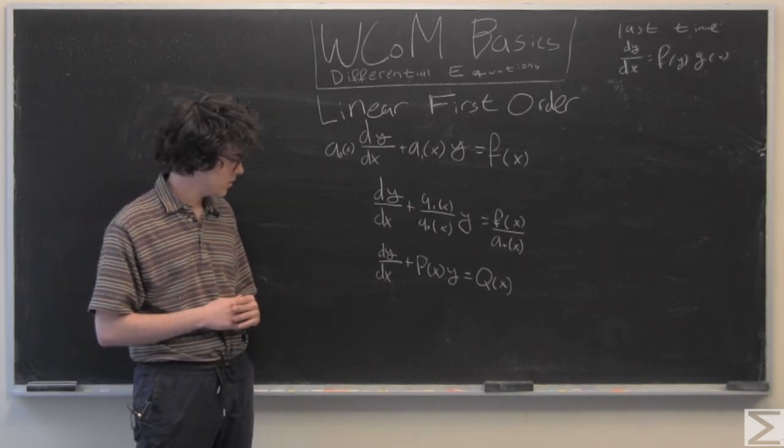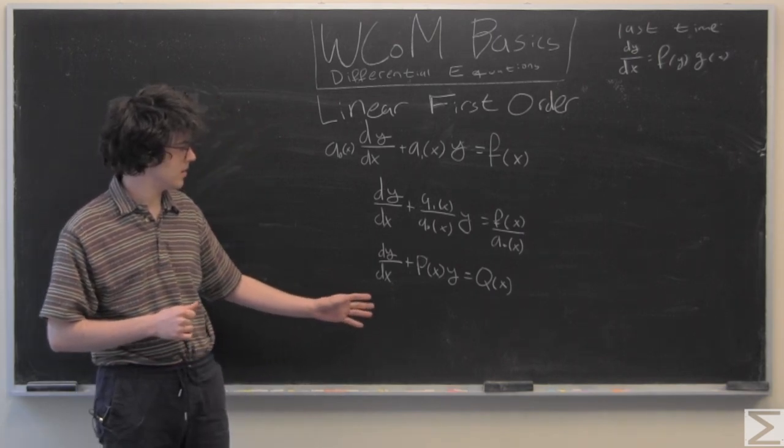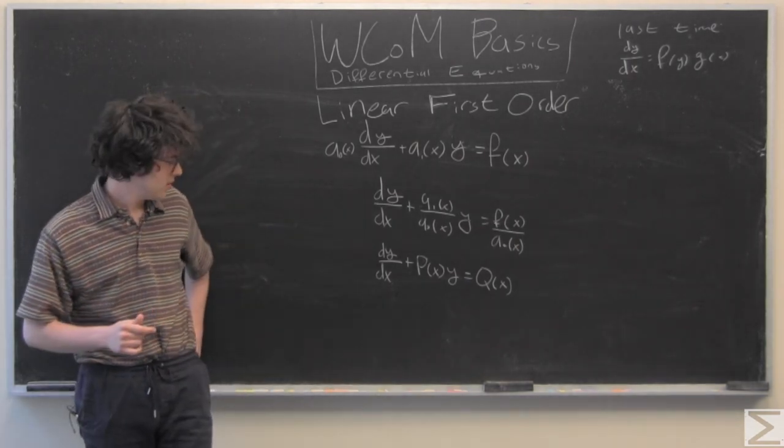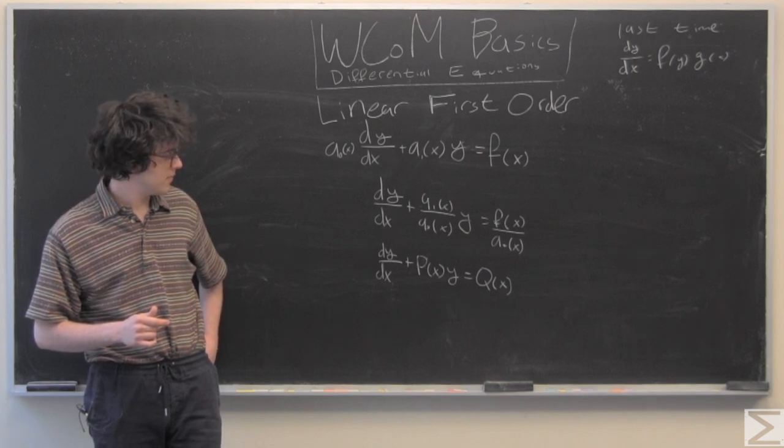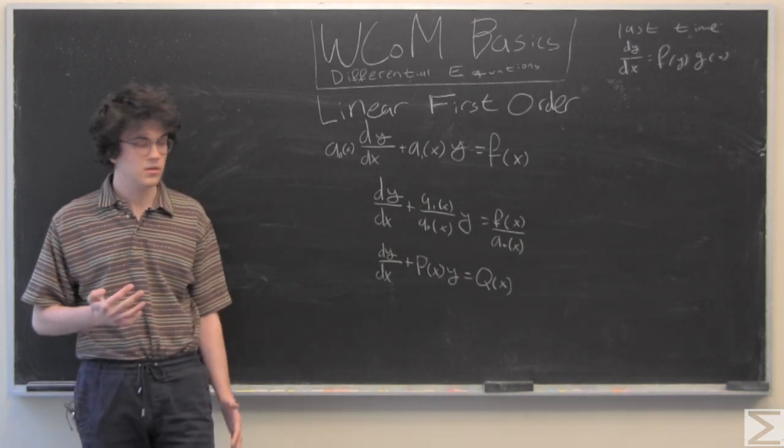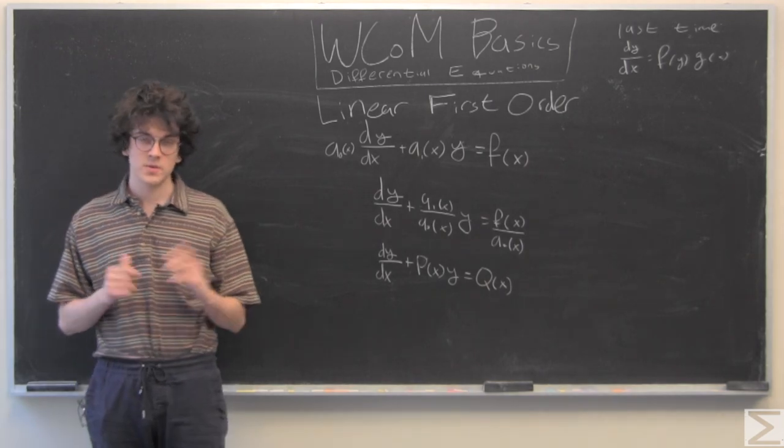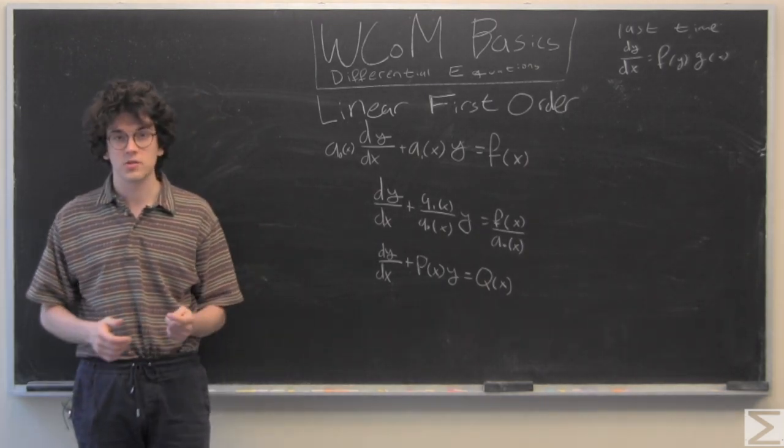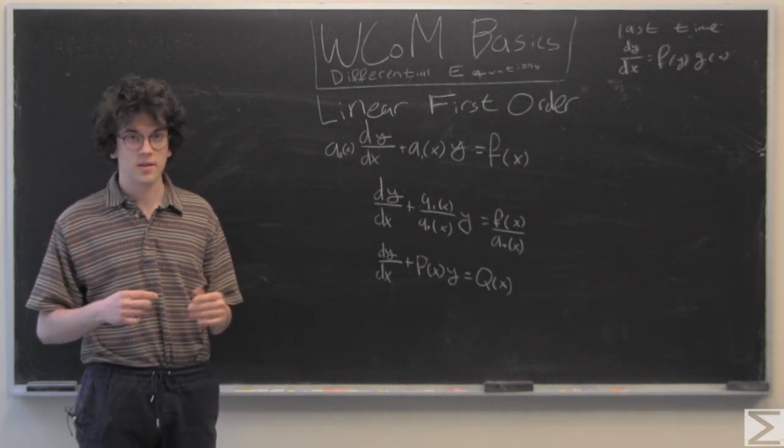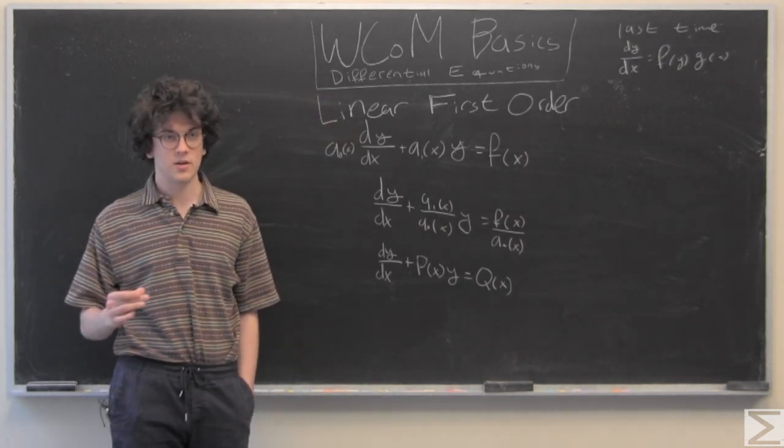So you notice that this is still not a separable differential equation. We can get dy/dx on one side, but then we have this term with p(x) and then a linear term of y, and that's not going to help. So we're going to see if we can multiply throughout by something to force this to be a separable differential equation that we know how to solve. And we're going to call this factor i.